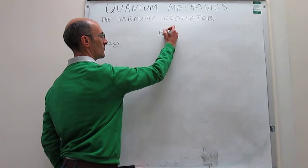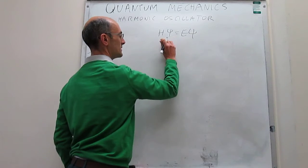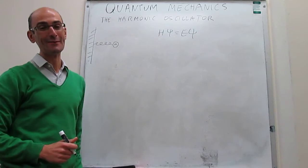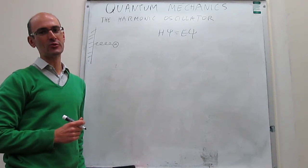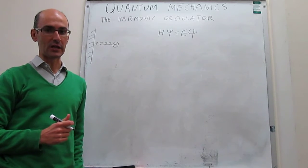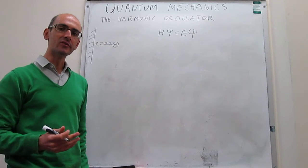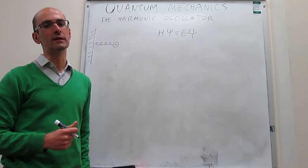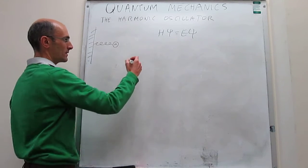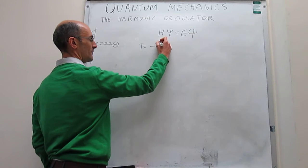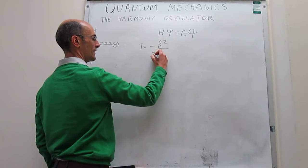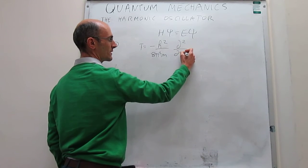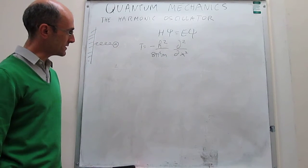The first thing we have to do is write the Schrödinger equation, and then think about the Hamiltonian operator. The Hamiltonian operator has two terms: a kinetic energy term and a potential energy term. The kinetic energy term is identical to the one for the particle in a 1D box, since the motion is only along one dimension, the x-axis. It looks like this: minus h-bar squared over 4π²m, times the second derivative of the wave function with respect to x.